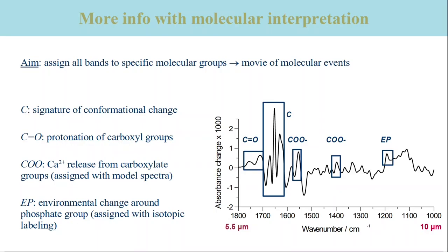The fingerprint approach described above does not use the whole information that is encoded in the spectrum. The ultimate aim of spectrum interpretation is to assign all the bands in a difference spectrum to specific molecular groups. This will then yield information on the environment and interactions of the respective groups. If this is done for time-resolved experiments, we will get a sort of movie of the molecular events that take place during the protein reaction.